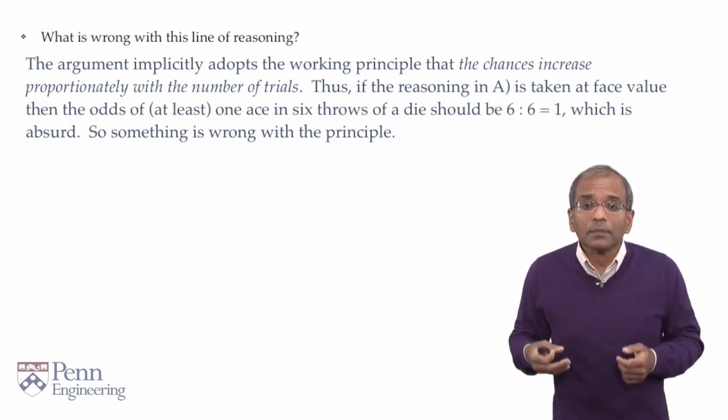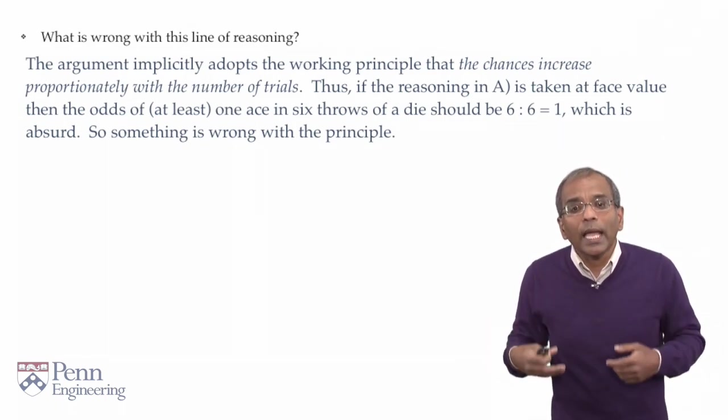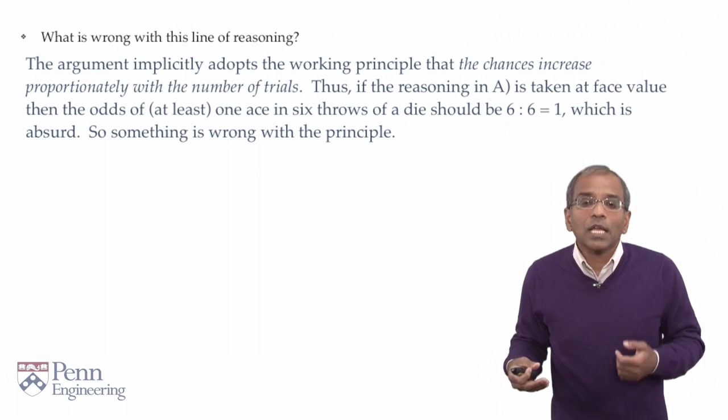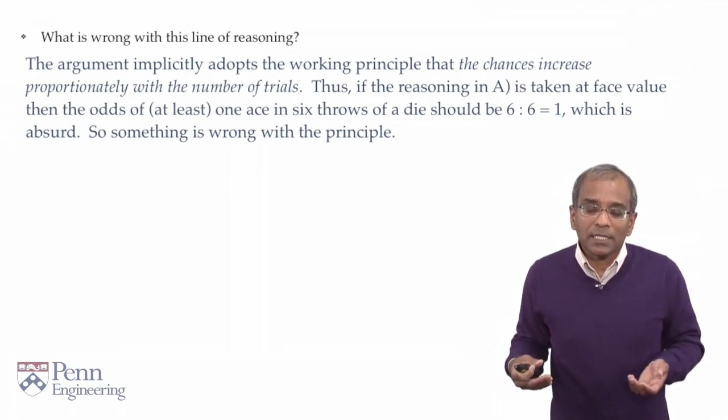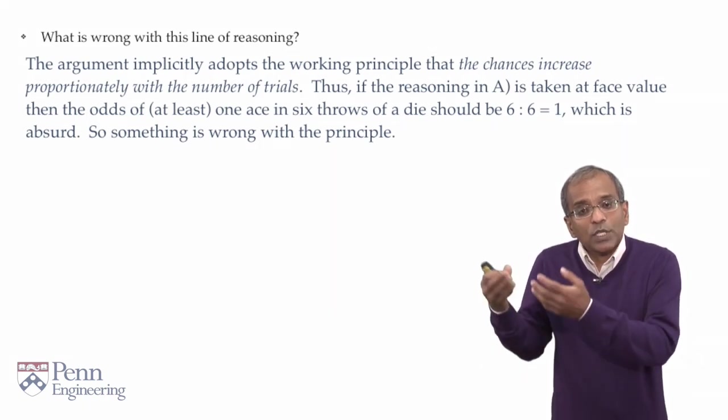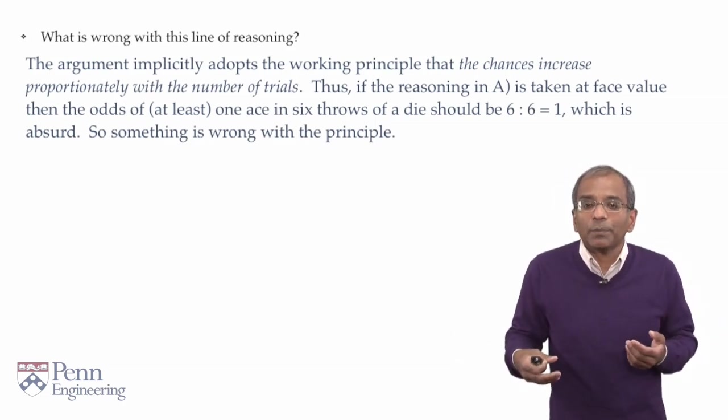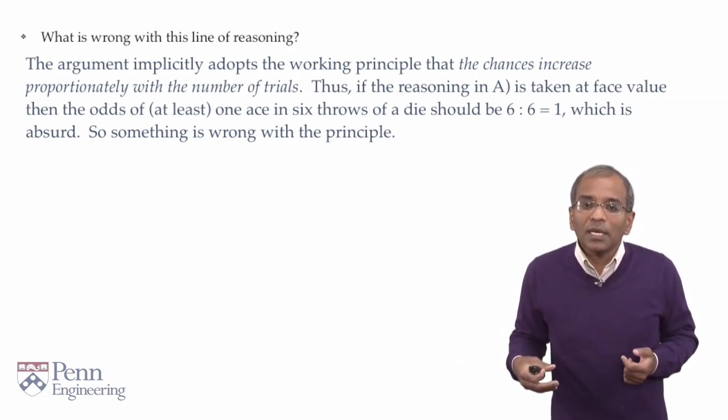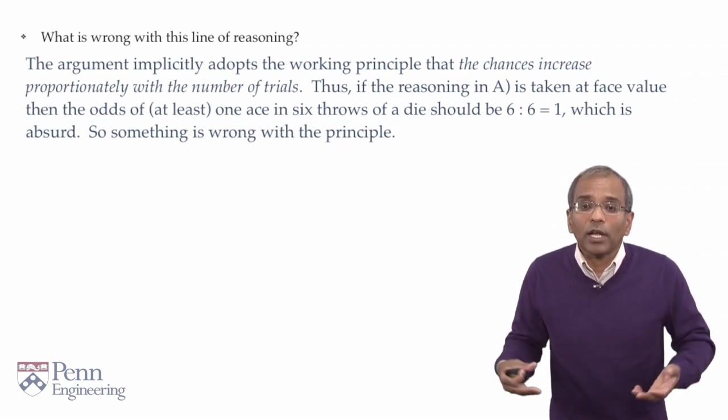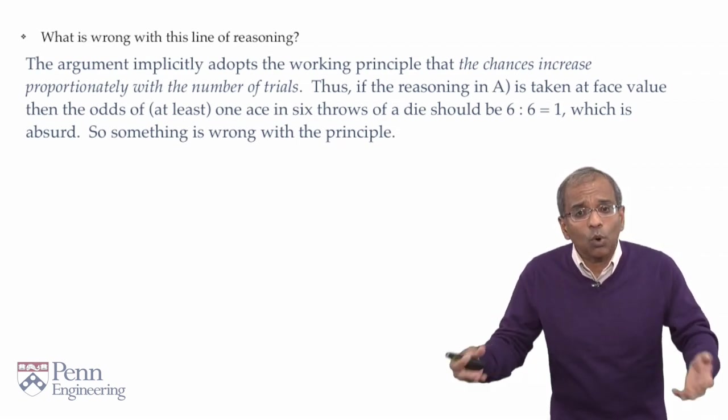Thus, for example, if one is tossing a die repeatedly, and if one wants to observe an ace, the chance of observing an ace is 1 in 6 per trial. And therefore, in two trials, we anticipate a 2 in 6 chance. In three trials, a 3 in 6. In 4 trials, 4 in 6. And so on.